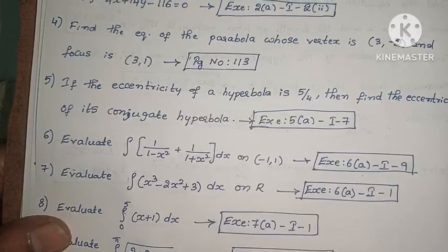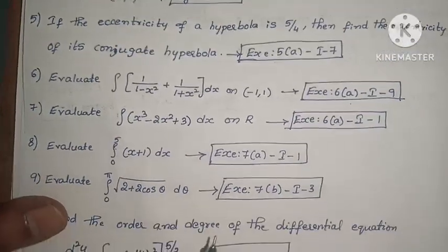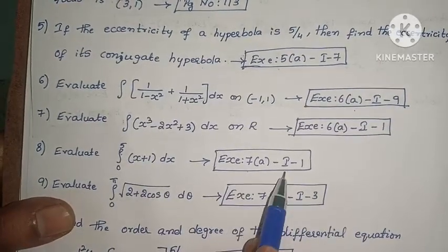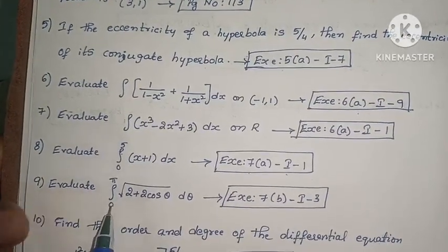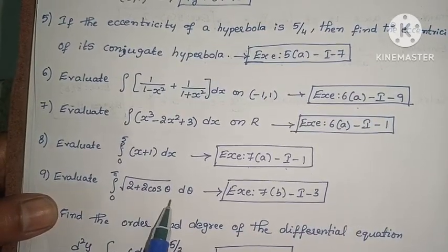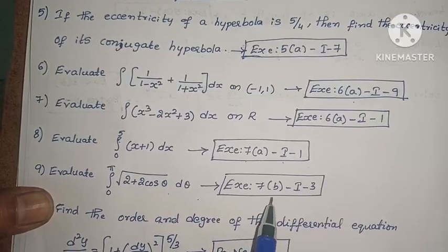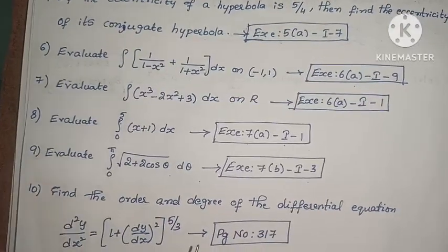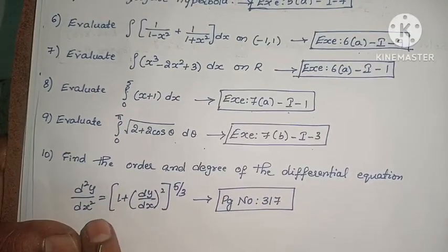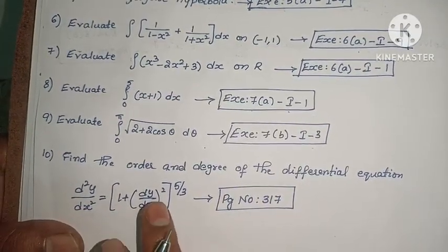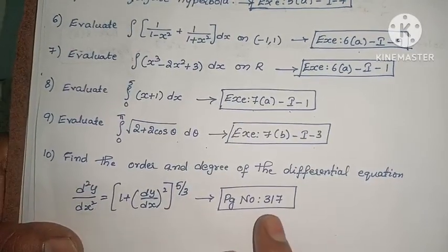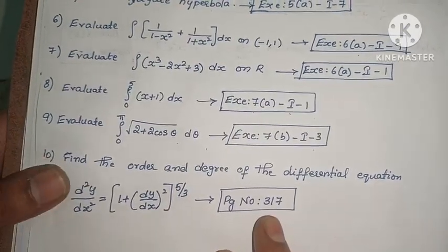Next: evaluate ∫₀^π √(2 + 2cosθ) dθ. This is question 7, first exercise, third problem. Next: find the order and degree of the differential equation d²y/dx² = [1 + (dy/dx)²]^(5/3). This is example problem on page number 317.